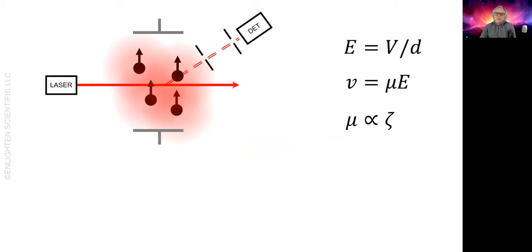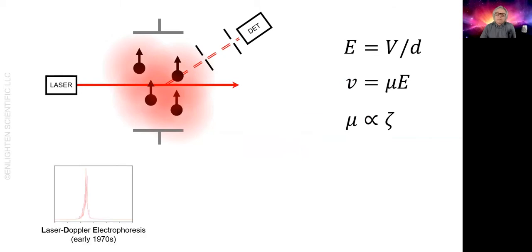If you know the geometry of the equipment, you can convert the frequency distribution to a velocity distribution. If you know the electric field, you can get an electrophoretic mobility distribution and then calculate a zeta potential distribution. This has been available since the 1970s, and here we see a zeta potential distribution.